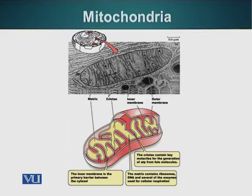The material present inside the mitochondria is called the matrix. The matrix has ribosomes — mitochondria have their own ribosomes. Mitochondria also have their own DNA, so they can make their own proteins. However, their ability to make proteins is limited, and they have to import many proteins from the cell.